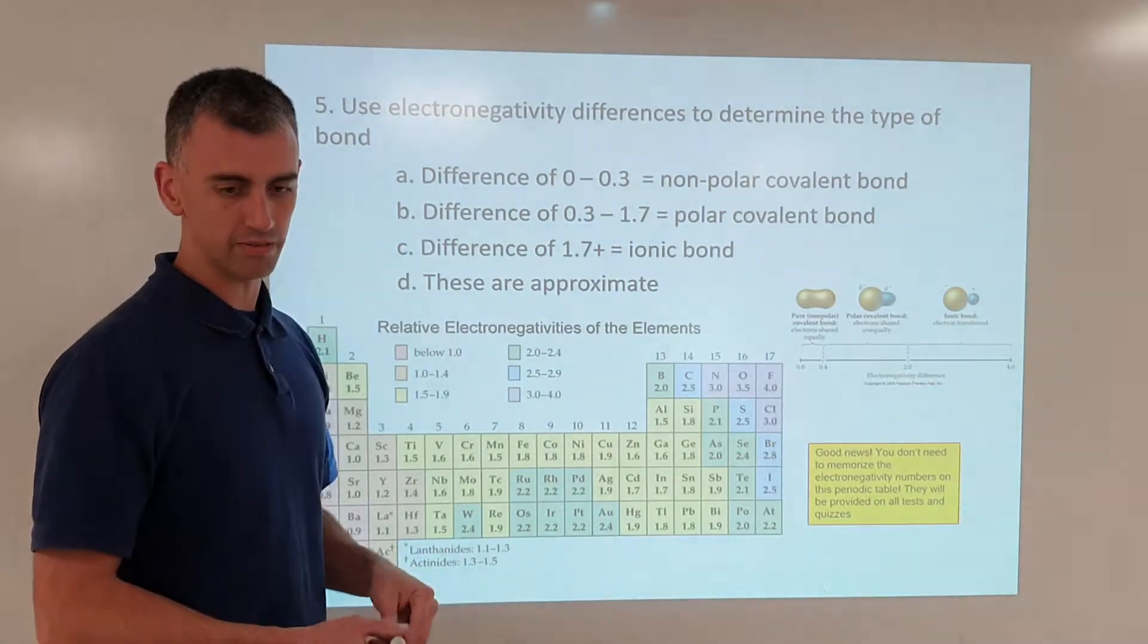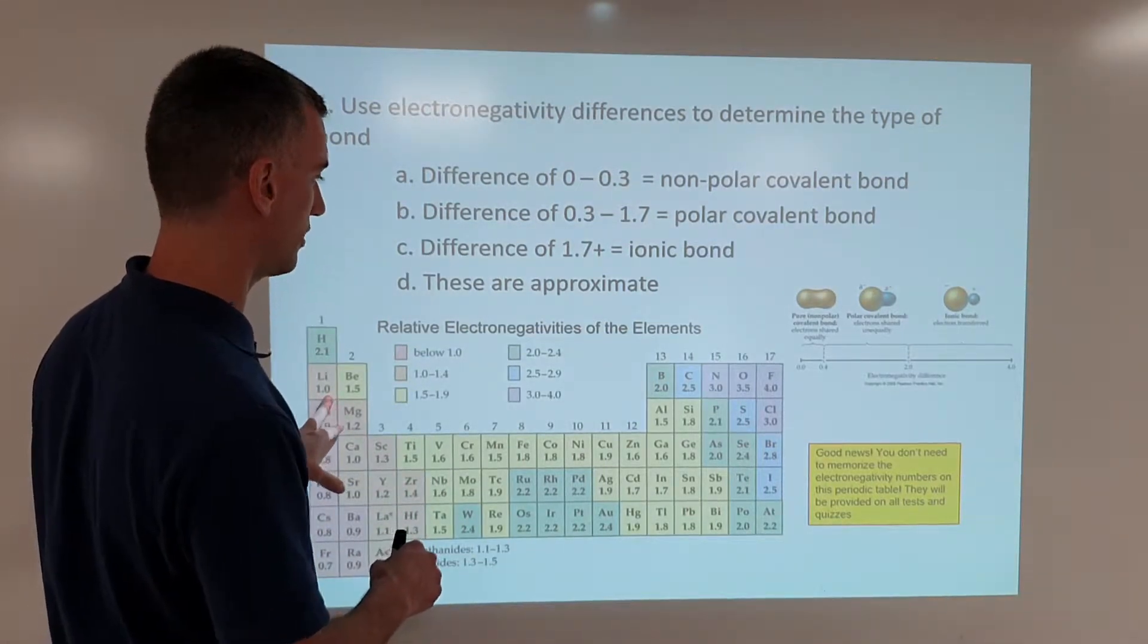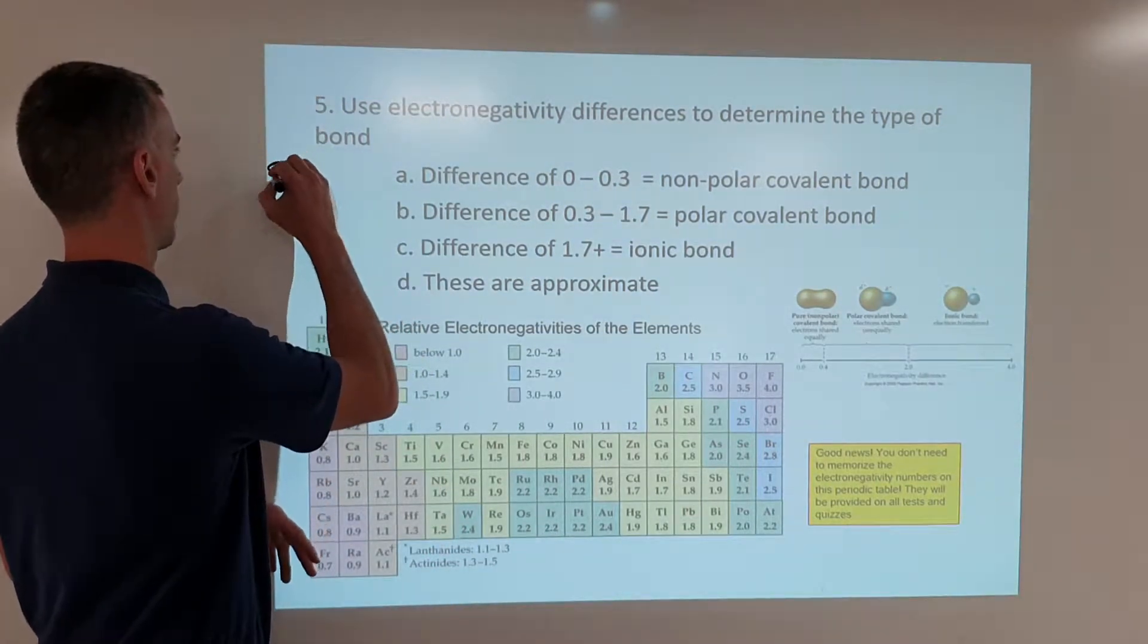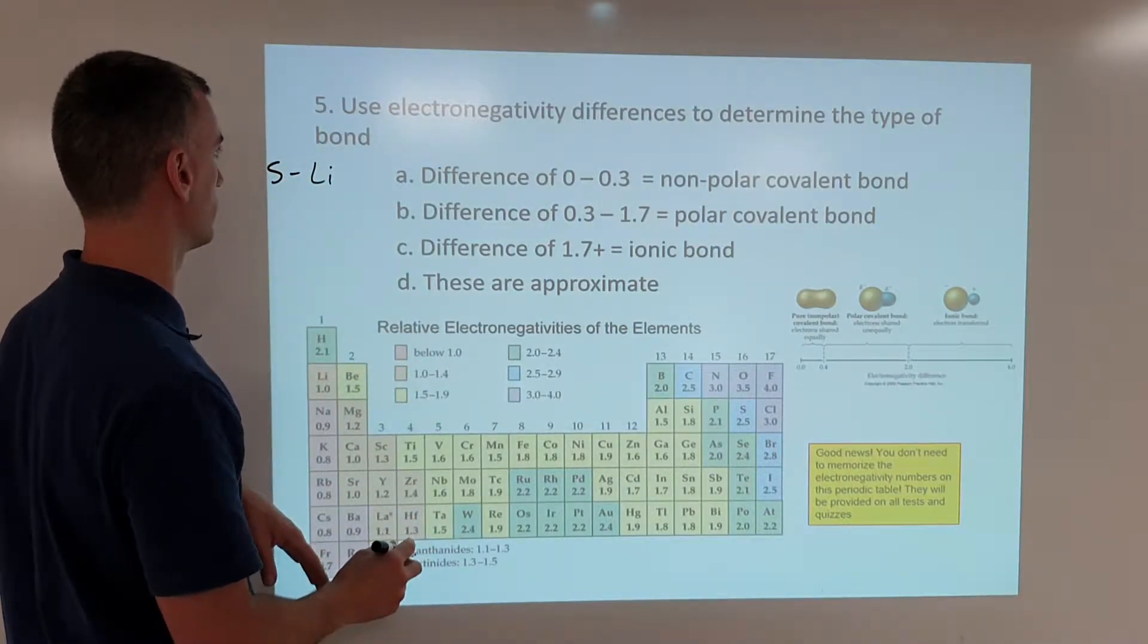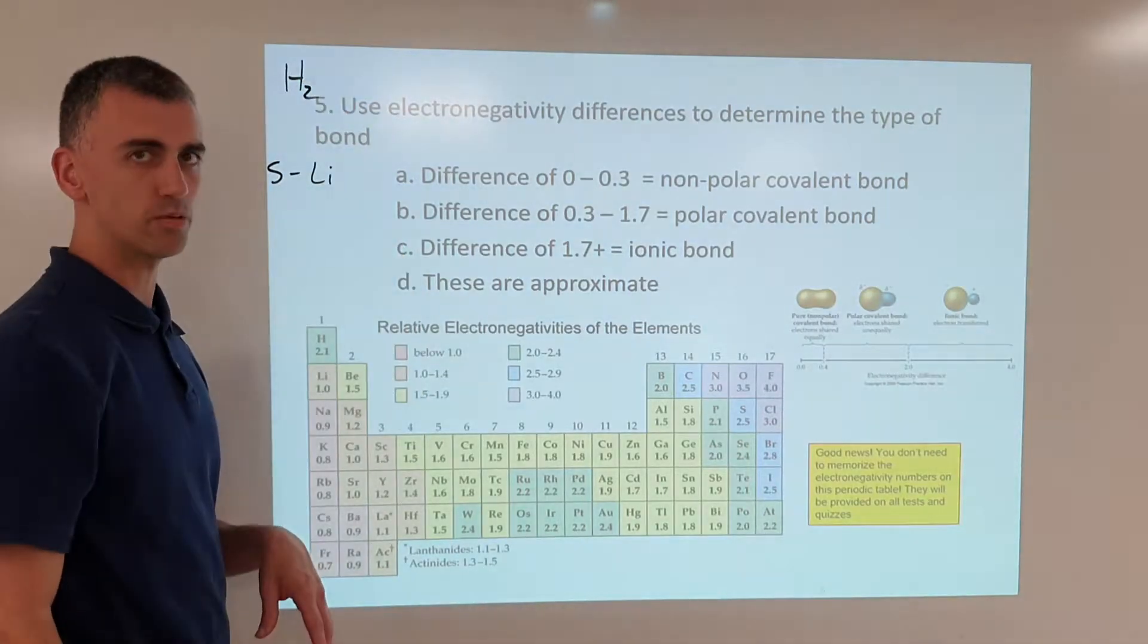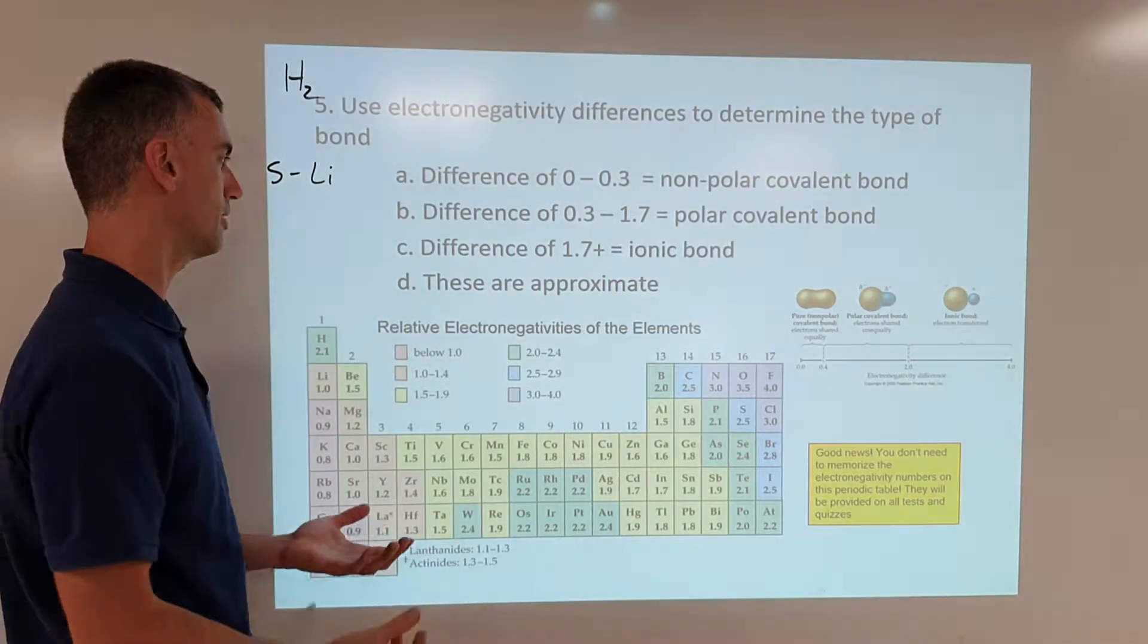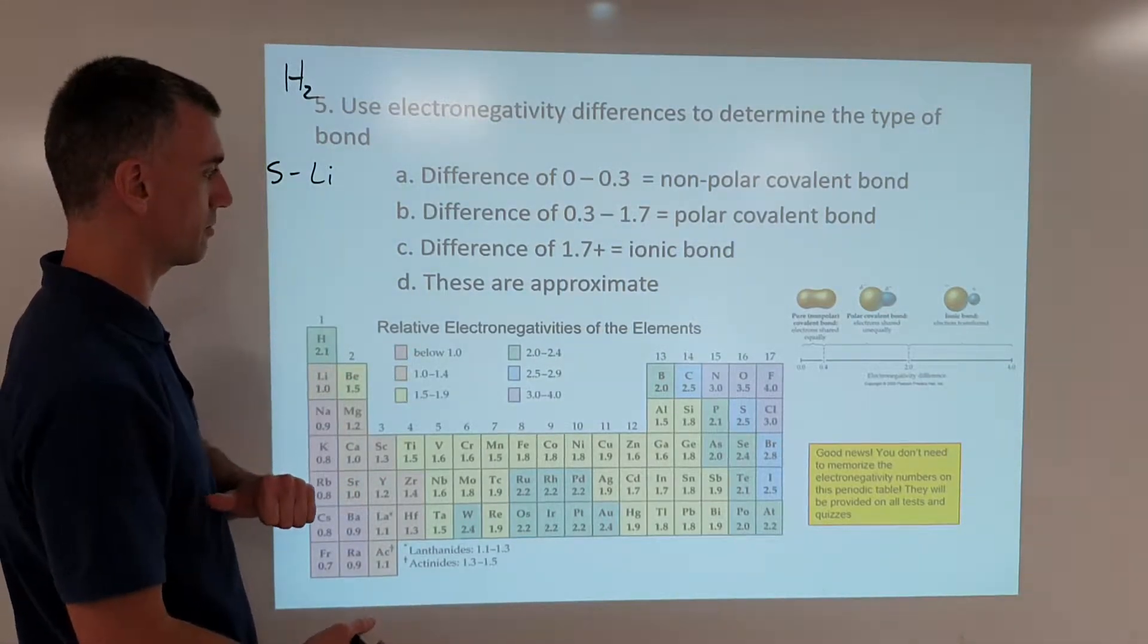You will be given either a simple bond, such as lithium and sulfur, or maybe the formula of a compound, maybe H2. Either way, you should be able to figure out what type of bond is going to exist between the two. So for sulfur and lithium, for example,